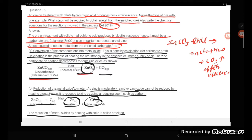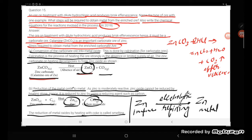The reduction of metal oxide by heating with coke is called smelting. After getting the zinc, it is impure, so electrolytic refining is performed. After electrolytic refining, we get pure zinc metal. This is the complete answer. Thank you so much for watching.